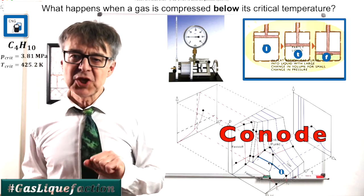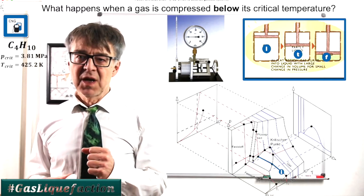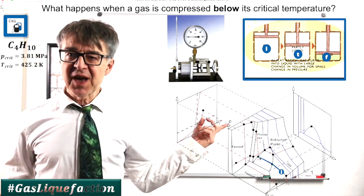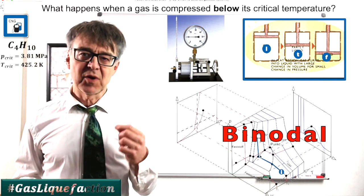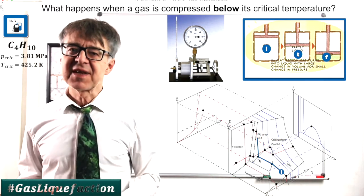Both temperature and pressure on this conode are constant, only the volume decreases. Only when we reach the intersection with the other binodal line, it's the boiling point curve, the pressure goes up again to the final state F.